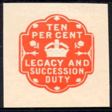Arthur Pigou himself said: "It must be confessed, however, that we seldom know enough to decide in what fields and to what extent the state, on account of the gaps between private and public costs, could interfere with individual choice." In other words, the economist's blackboard model assumes knowledge we don't possess — a model with assumed givens which are in fact not given to anyone. Friedrich Hayek would argue that this is knowledge which could not be provided by any method, due to insuperable cognitive limits.